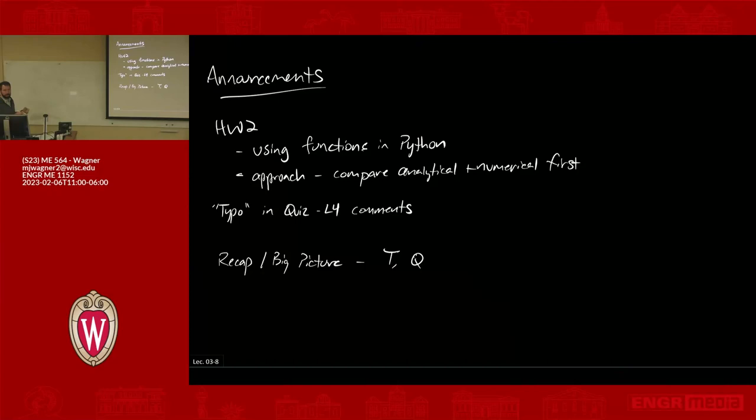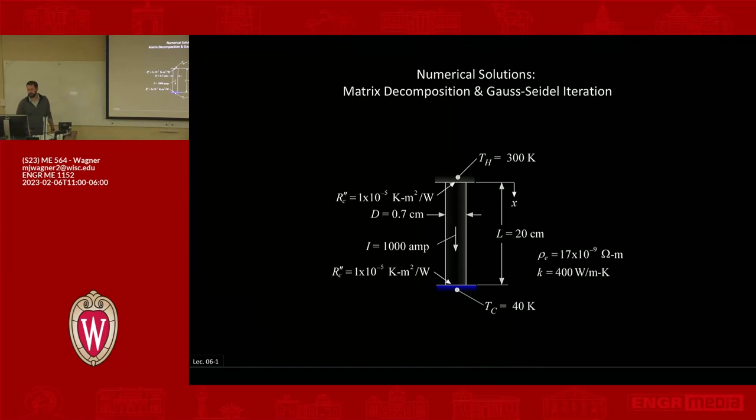Okay. Just keeping that in mind. Okay. Other questions before we get started? Nope. All right. So today we're going to be talking about numerical solutions using matrix decomposition and something called Gauss Seidel iteration. So these are two separate methods. We'll talk about both of them. And these sort of follow from the discussion that we had last time, which was using Ease to solve a numerical solution.